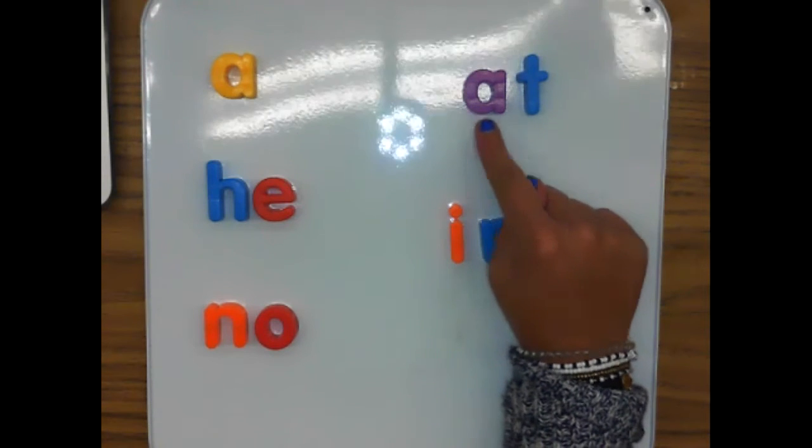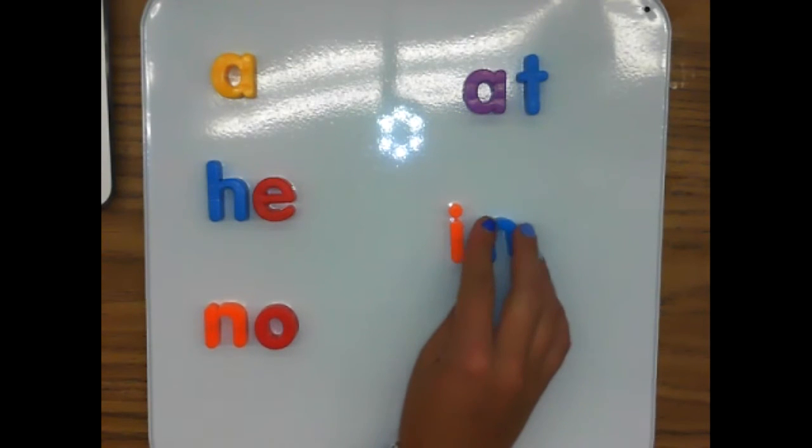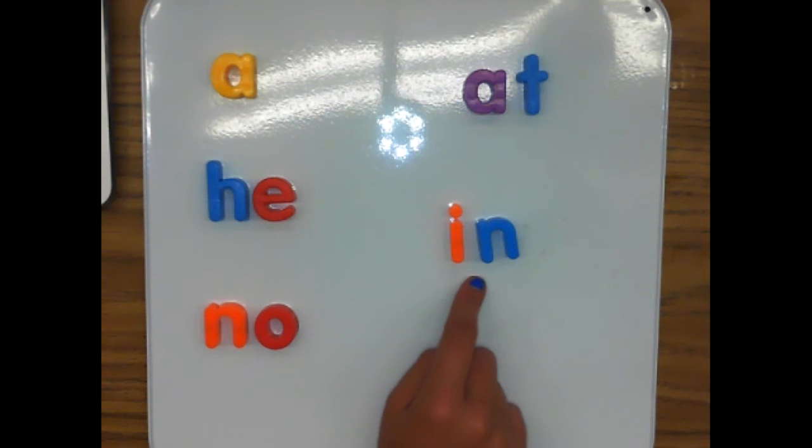Do it with me again. A-T spells at, at, at. And this word is in, like I am in kindergarten or what is in the soup or I am in my dad. Ready let's spell it. I-N spells in, in, in. I-N spells in, in, in. I-N spells in, in, in. Awesome job! Let's review the words.